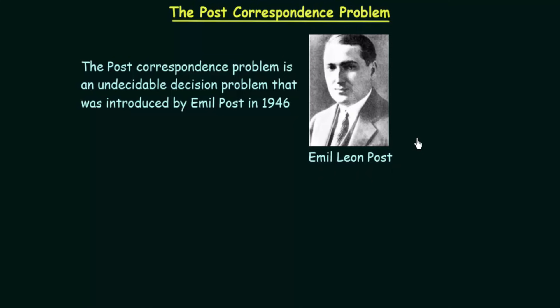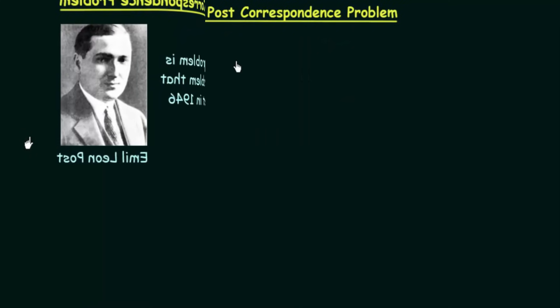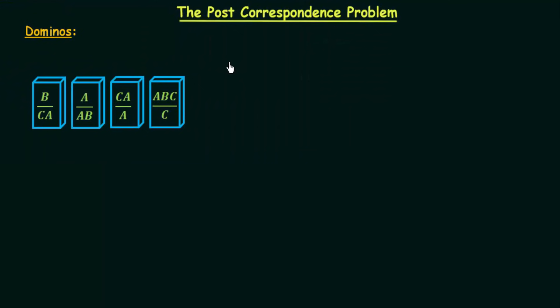Now let us see what the Post Correspondence Problem, or PCP, actually is. I will show you an instance or an example of the PCP in order to understand what this problem is. In PCP we have something called dominoes — tiles that have two parts. They are sometimes called tiles and sometimes called dominoes; we shall be calling them dominoes.